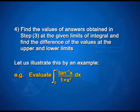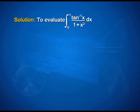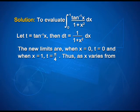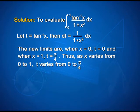Evaluate the integral from 0 to 1 of tan⁻¹x / (1 + x²) dx. Let t = tan⁻¹x; then dt = 1/(1+x²) dx. The new limits are: when x = 0, t = 0, and when x = 1, t = π/4. Thus as x varies from 0 to 1, t varies from 0 to π/4.